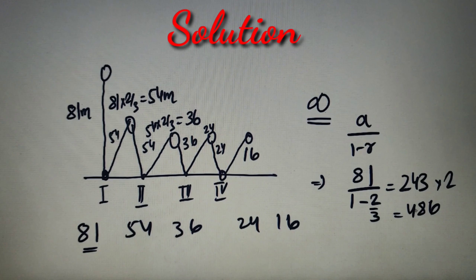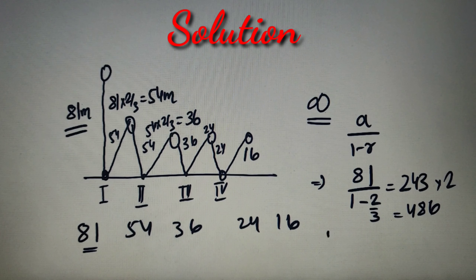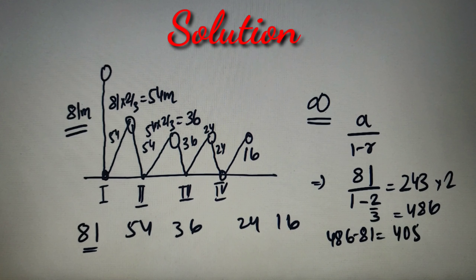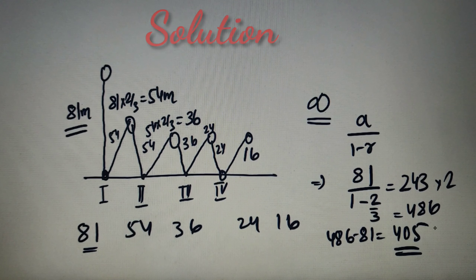But if you look carefully, this is still not the correct answer, because we are counting the ball going downward from 81 meters, but it does not rise back to 81 meters — so we have taken 81 twice. We need to subtract 81 from 486. That gives us 486 − 81 = 405 meters. This is the final answer for Part B: before coming to rest, the ball will travel a total distance of 405 meters.